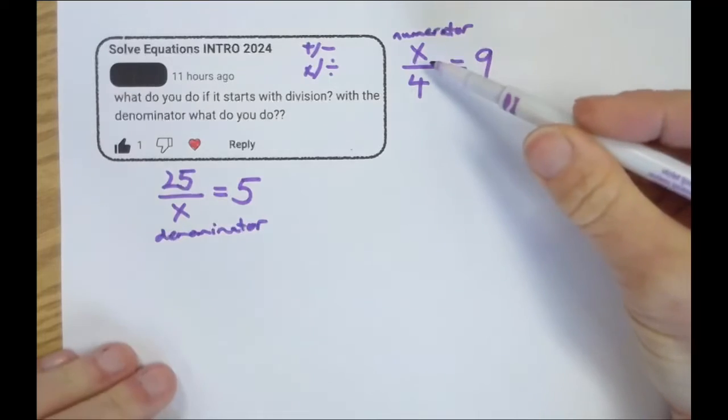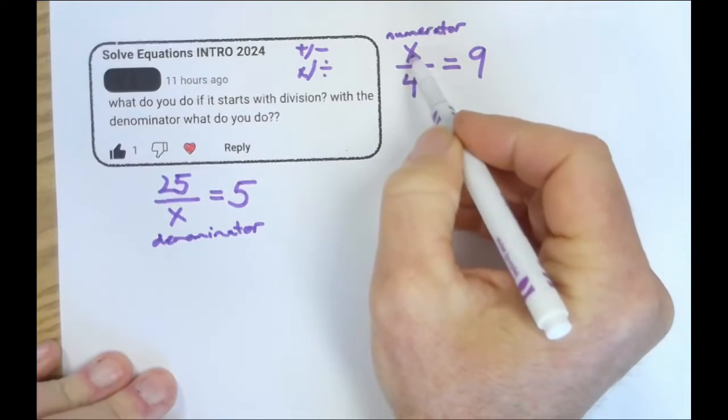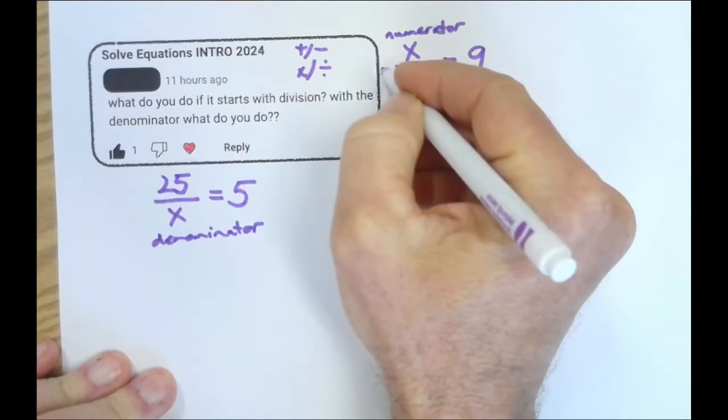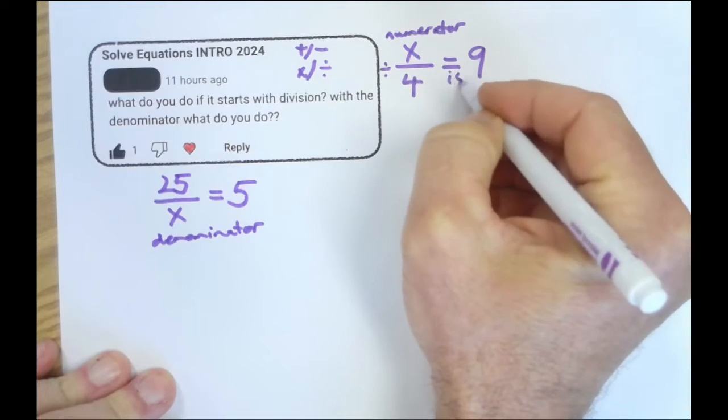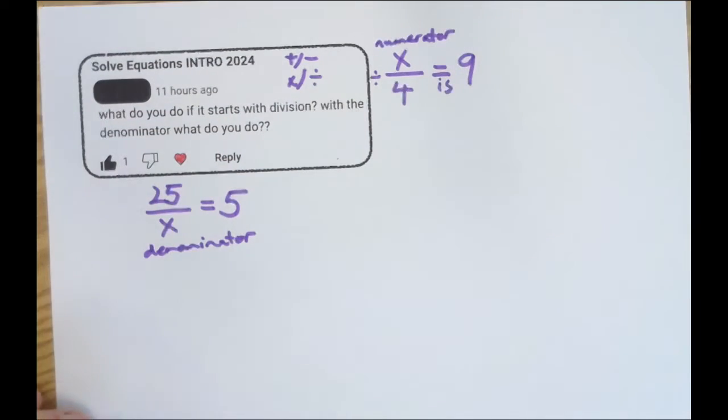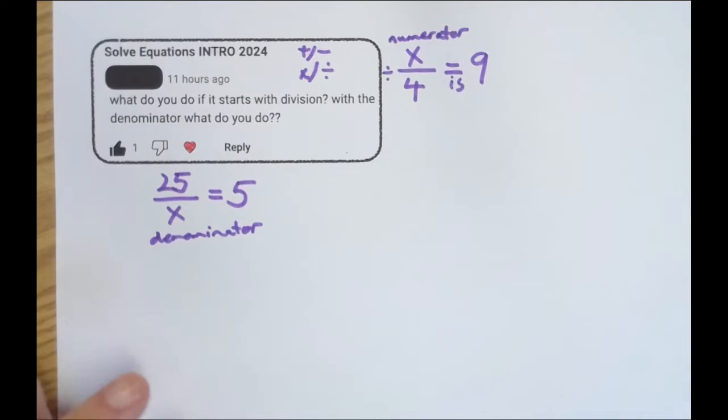Now, what this actually means is some number that we don't know yet divided by 4 is 9. Think about it. Do it in your head. What is it? Good. We know it's 36. How do we know it's 36?